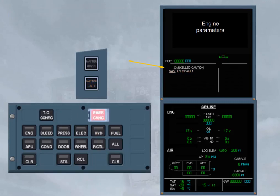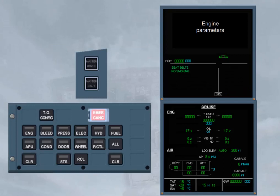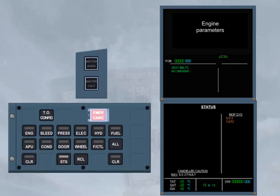When the emergency cancel push button is pressed, the related caution message on top of the left side of the engine warning display is removed. To confirm it, a white message is displayed for a few seconds, and the status caption appears at the bottom of the engine warning display, as the white message has been transferred to the status page. Notice that the master caution lights are off. We have selected the status page for you. Notice that the white message is displayed on the left bottom part of the page.